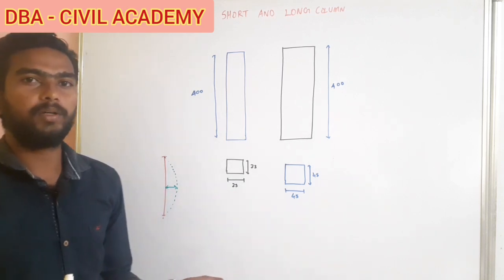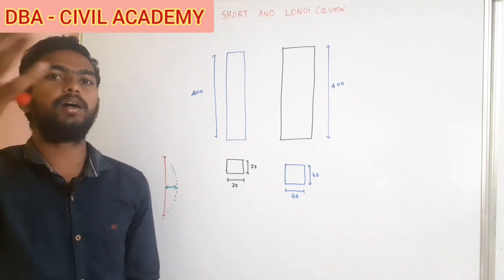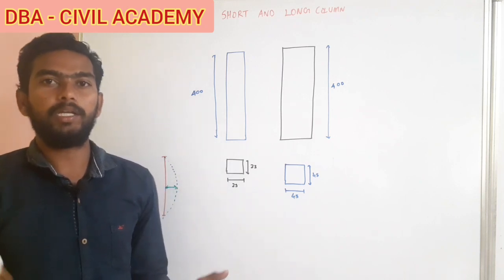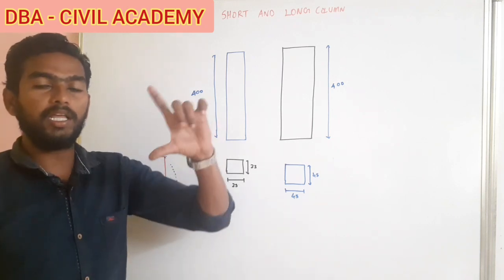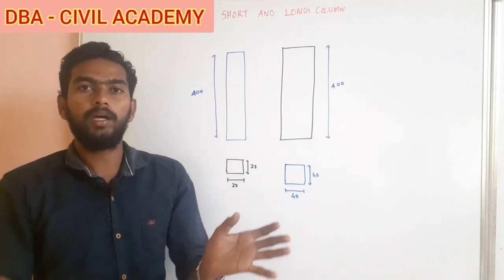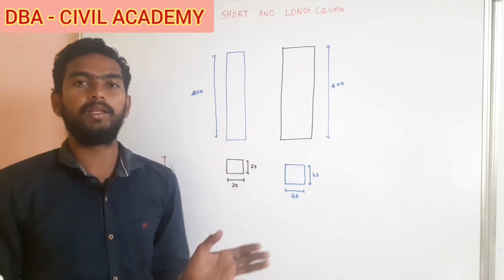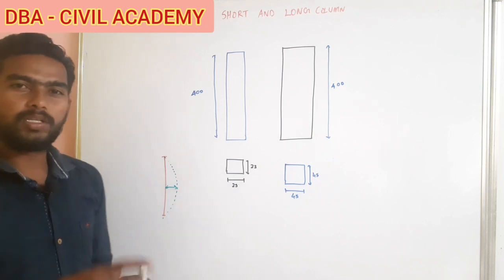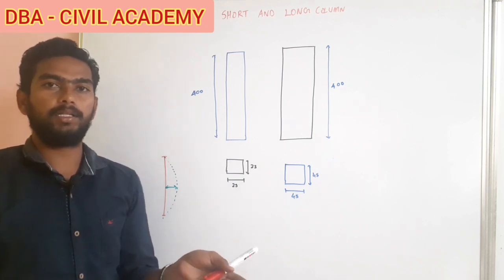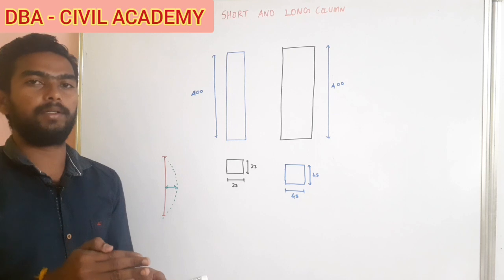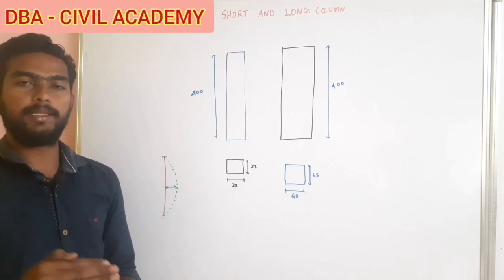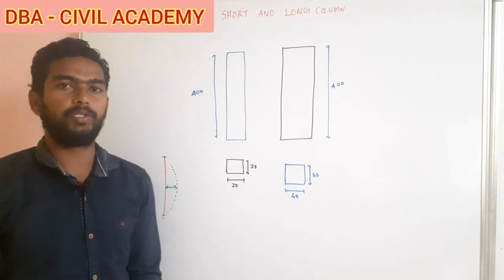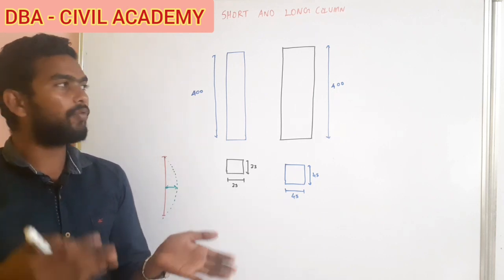So, if you define the length of the column and the cross-section, you can classify the column. To define the column, we use the Slenderness Ratio, which is a formula we can apply.